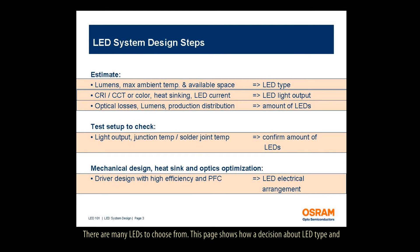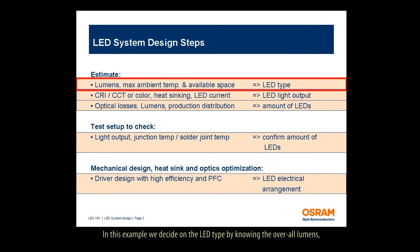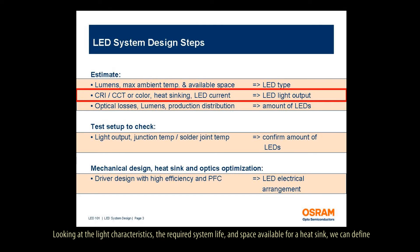There are many LEDs to choose from. This page shows how a decision about LED type and number of LEDs per system can be approached. In this example, we decide on the LED type by knowing the overall lumens, the maximum ambient temperature, and the available package space. Looking at the light characteristics, the required system life, and the space available for a heat sink, we can define the current per LED.